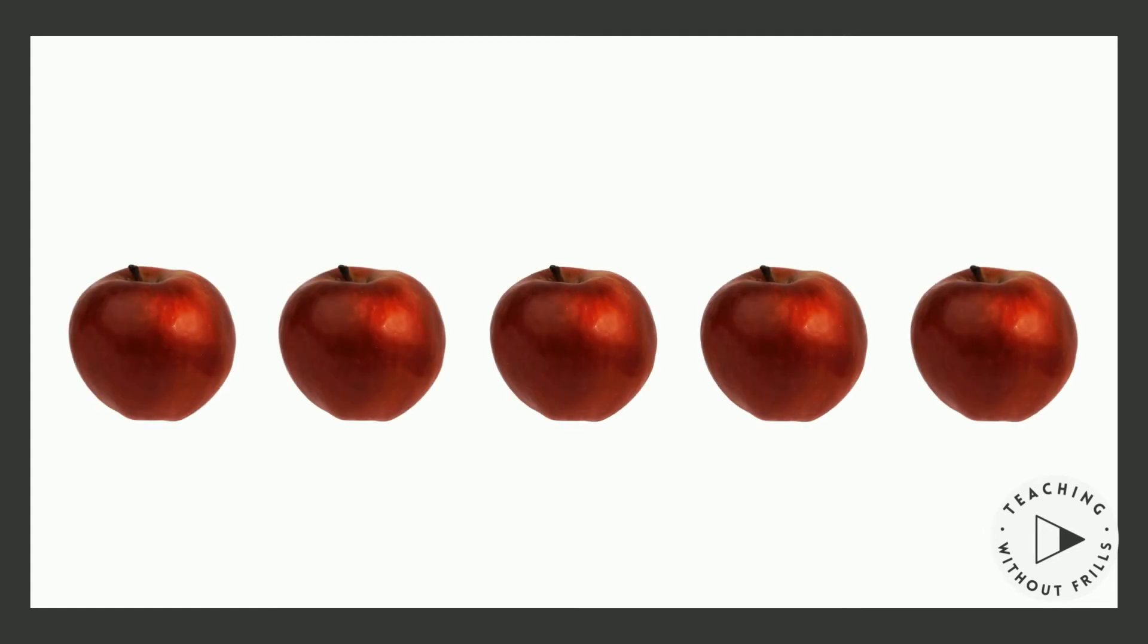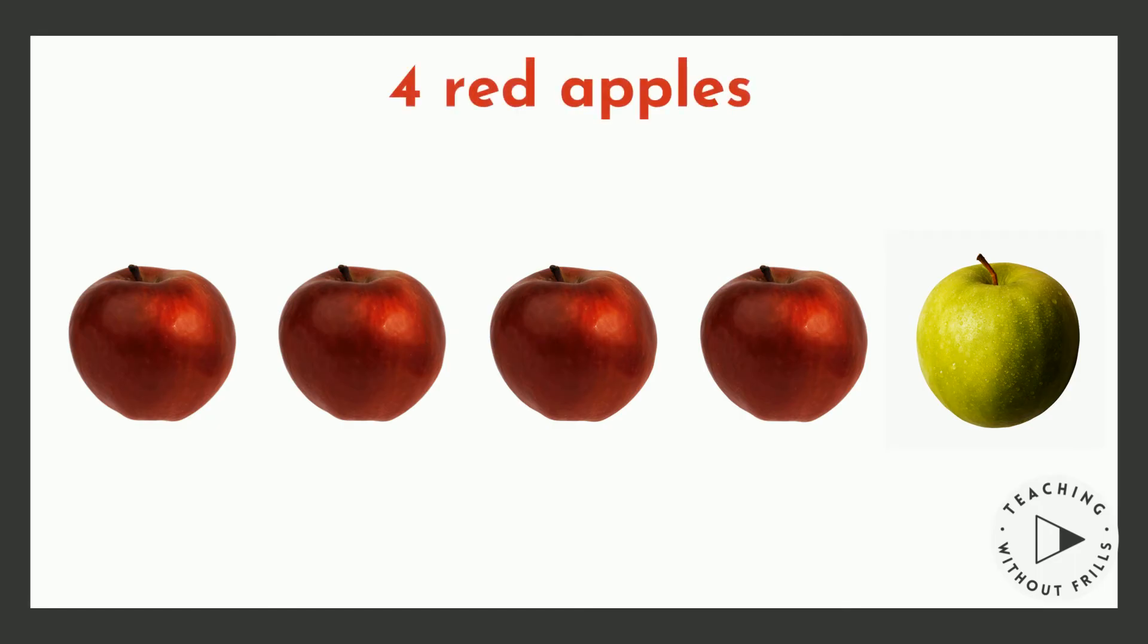Let's see. I could get all red apples. That would be five red apples and zero green apples. Or I could do this. Four red apples and one green apple.